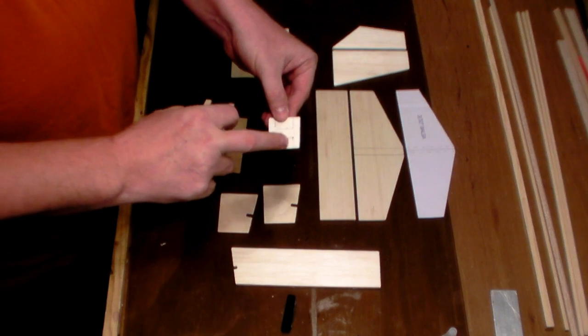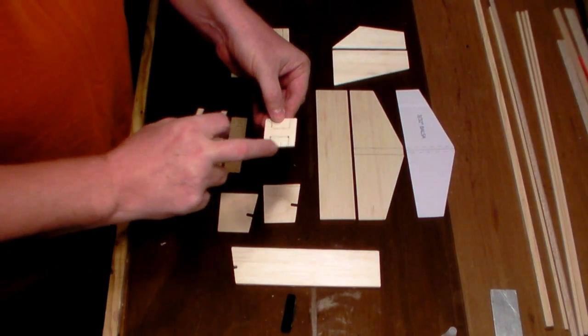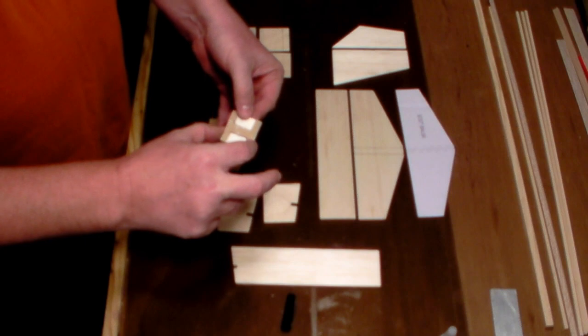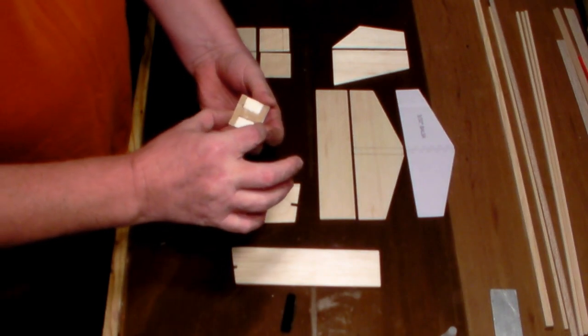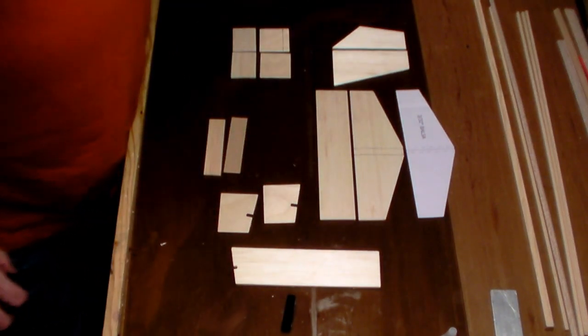Now, if you've gone to the trouble of taking your 3/32nds balsa, and cutting it out, that's great too. But, we're going to laminate these two pieces together. Okay, so I'll do that off camera.